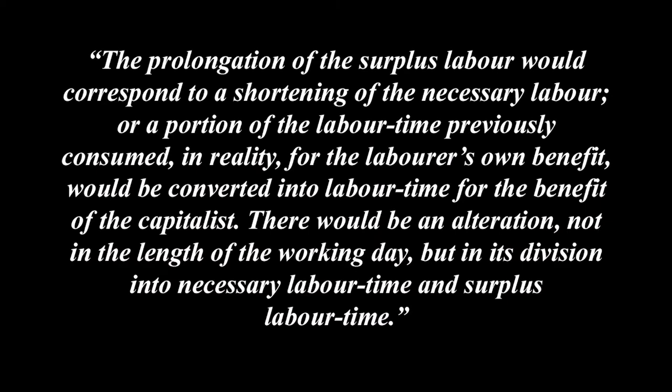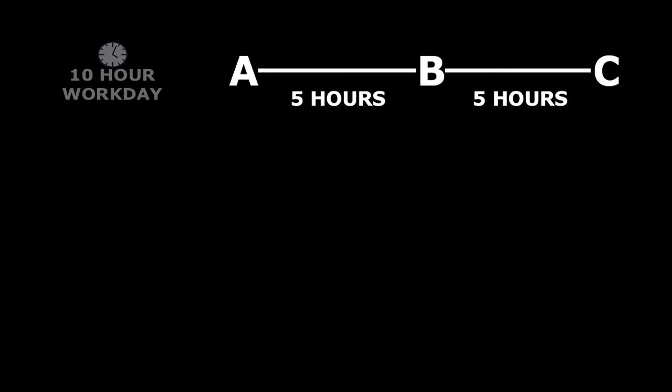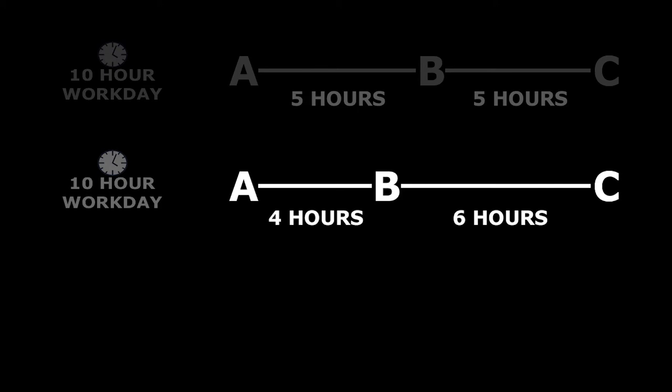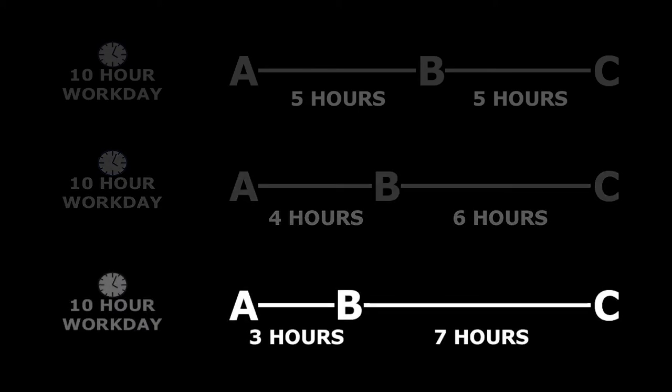The prolongation of the surplus labour would correspond to a shortening of the necessary labour, or a portion of the labour time previously consumed for the labourer's own benefit would be converted into labour time for the benefit of the capitalist. There would be an alteration not in the length of the working day but in its division into necessary labour time and surplus labour time. If we assume the total length of the working day is fixed — for example at 10 hours, represented on a line from A to C — Marx highlights that it's possible to increase surplus value by decreasing necessary labour time: A to B 5 hours / B to C 5 hours could become A to B 4 hours / B to C 6 hours, or A to B 3 hours / B to C 7 hours, etc.